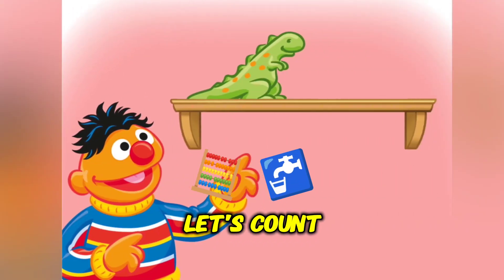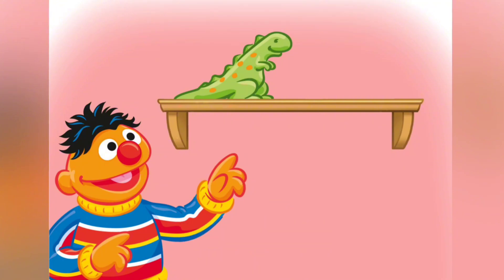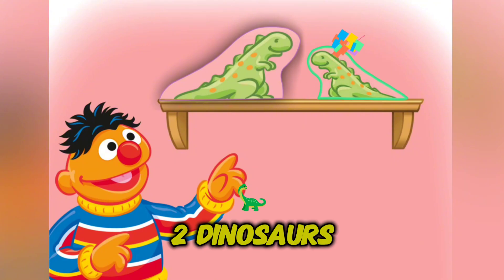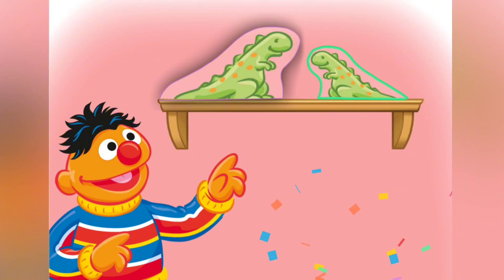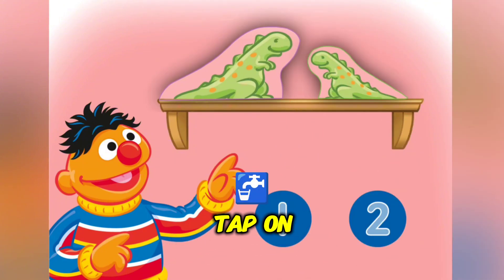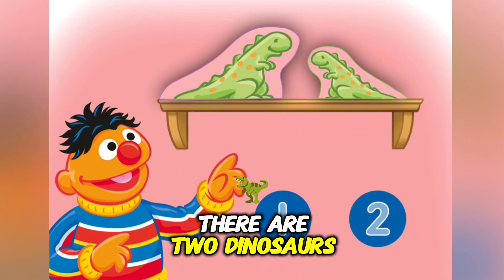Let's count. Tap on the dinosaur. One dinosaur. Here's another one — tap on it. Two dinosaurs. How many dinosaurs do you see? Tap on the correct answer. One. Two. There are two dinosaurs altogether.